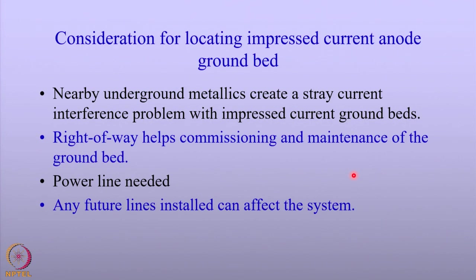The ground bed location is very important as far as impressed current anodes are concerned. This is less critical when you talk about sacrificial anodes. This is basically because impressed current anodes carry a huge amount of current, and so the resistance of the anode to the soil becomes very significant. Therefore, the location of the anodes is very important.